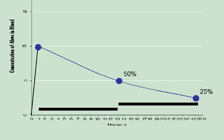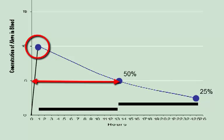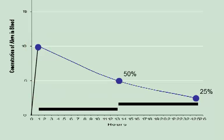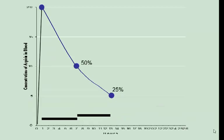Your curve for Aleve should look something like this. In my graph, the peak amount is 10, and at 13 hours I've reached 5, and at 25 hours I'm at 2.5 or 25 percent. Your curve for aspirin should look something like this. My peak value is 20. Therefore, at 7 hours I'm at 10, and at 13 hours I'm at 5.